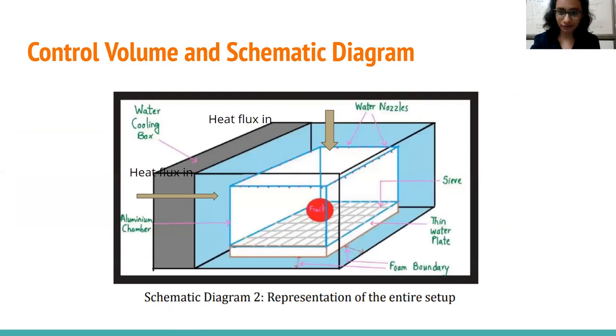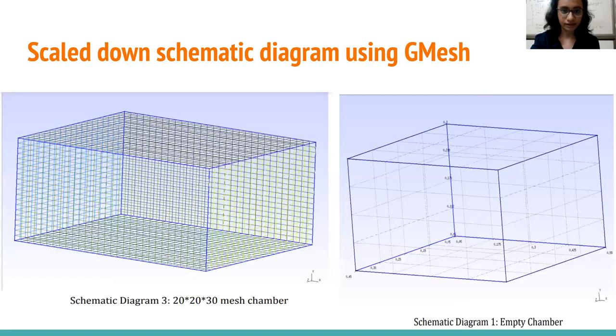This is the control volume that we'll be working on. So as you can see there is heat flux that comes in from the environment to the box and to model the food we have kept a fruit item in the box. As you can see there is a thin water plate at the bottom of the box. This is put forward with a sieve to ensure that the water that percolates towards the bottom layer gets collected here and then can get recycled by a piping mechanism. The water nozzles or the sprinkler system are at the top of the surface. There is a foam layer that insulates it from the environment across all six faces. The chamber itself is made of aluminium for reasons which we will see ahead. This is the schematic diagram of the chamber using gmesh.